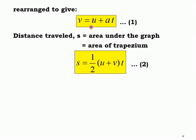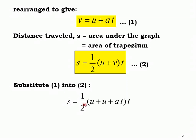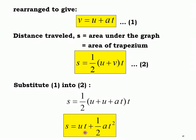The third and fourth formulas come from playing around with the first and second. Substituting the first formula v = u + at into the second equation: s = ½(u + u + at) × t = ½(2u + at) × t. Simplifying, we get s = ut + ½at². This is the third equation.